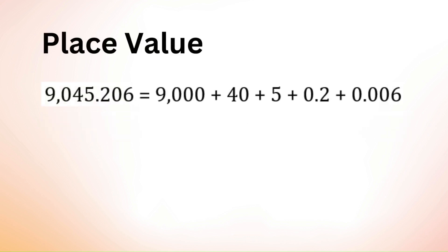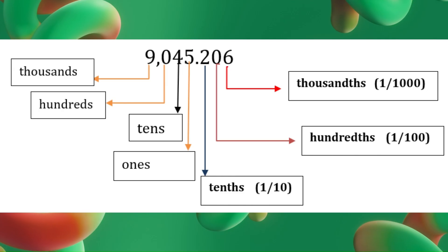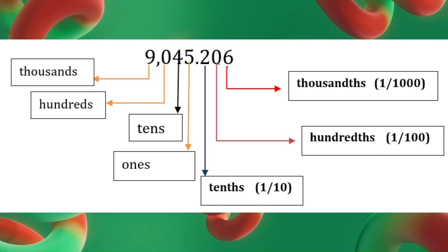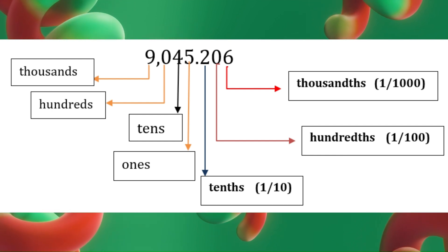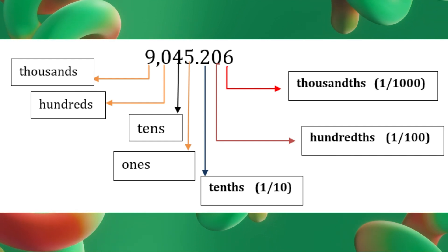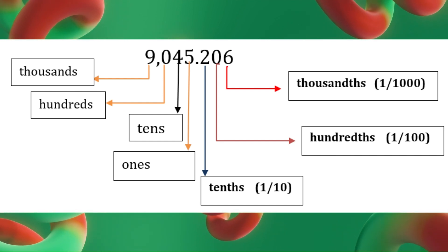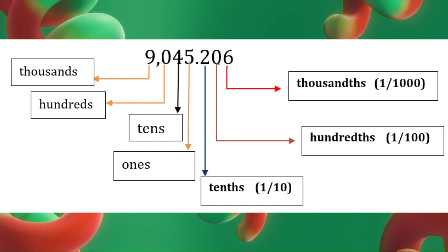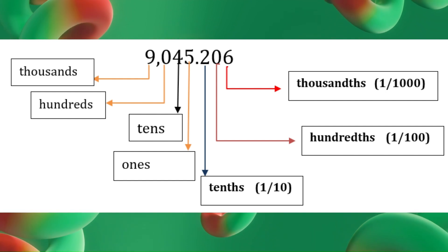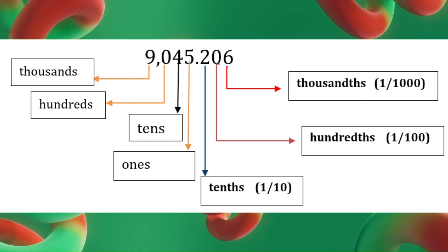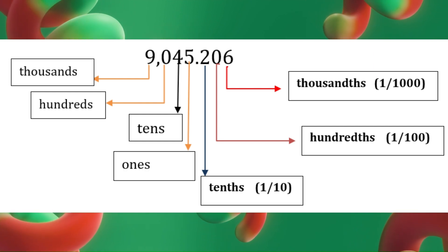Now consider another example: 9045.206. Look at the breakdown of the number. 9 is in the thousands place, so it represents 9,000. 0 is in the hundreds place, which represents 0 or nothing. 4 is in the tens place, representing 40. 5 is in the ones place, representing 5.